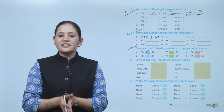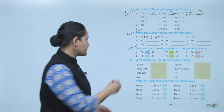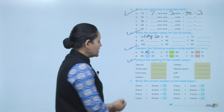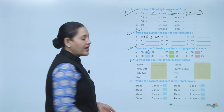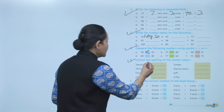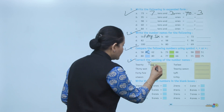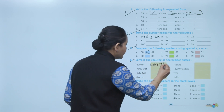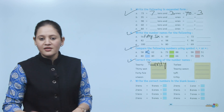Next, correct the spelling of the number name. The incorrect spelling given is T-E-W-A-N-T-Y. The correct spelling is T-W-E-N-T-Y.